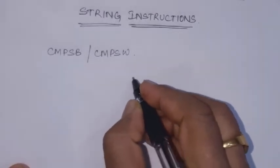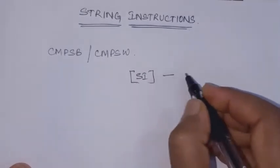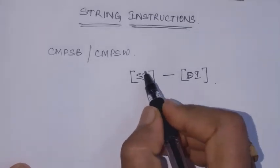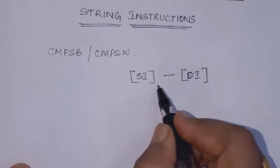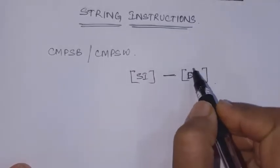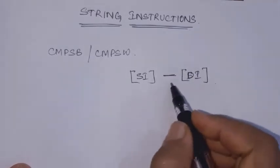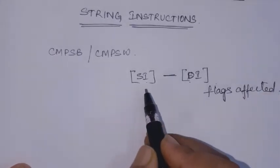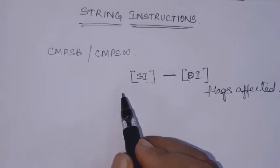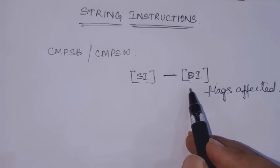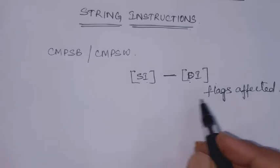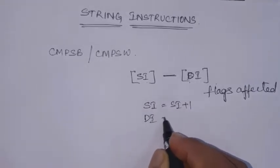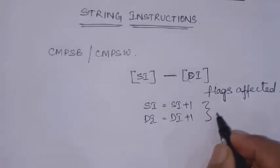The comparison is the same as a normal comparison instruction: source index register is pointing to the source string, destination pointing to the destination string byte. This is performed and only flags are affected — all the flags are affected. The contents of the strings in memory remain the same; only the comparison is done and the flags are affected. After this comparison, SI is incremented by 1 and DI is incremented by 1 automatically.